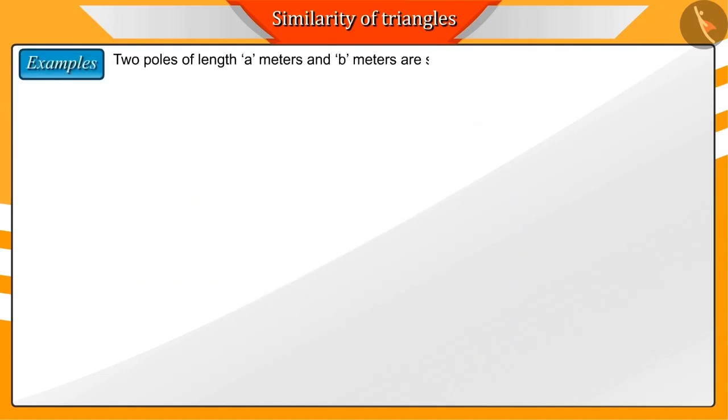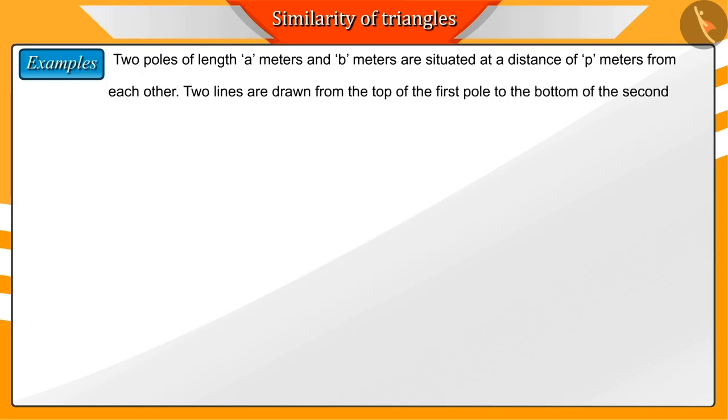Two poles of length a meters and b meters are situated at a distance of p meters from each other. Two lines are drawn from the top of first pole to the bottom of the second pole and vice versa. Find the height of the intersecting point of those two lines.